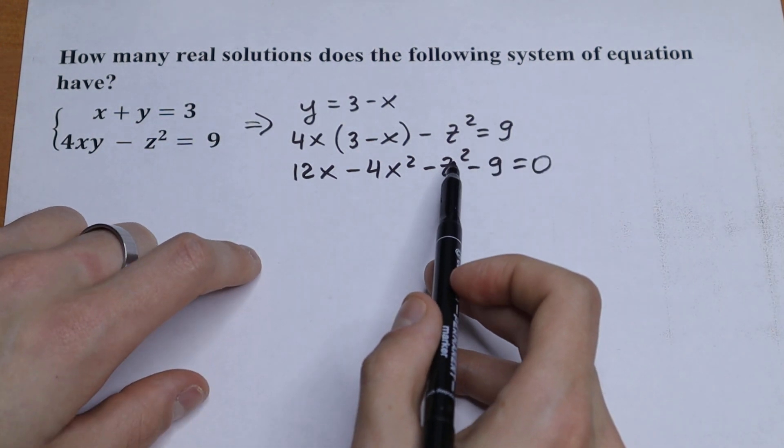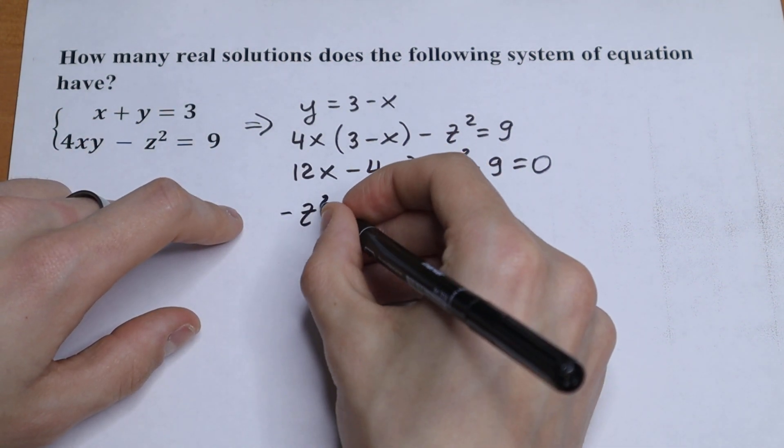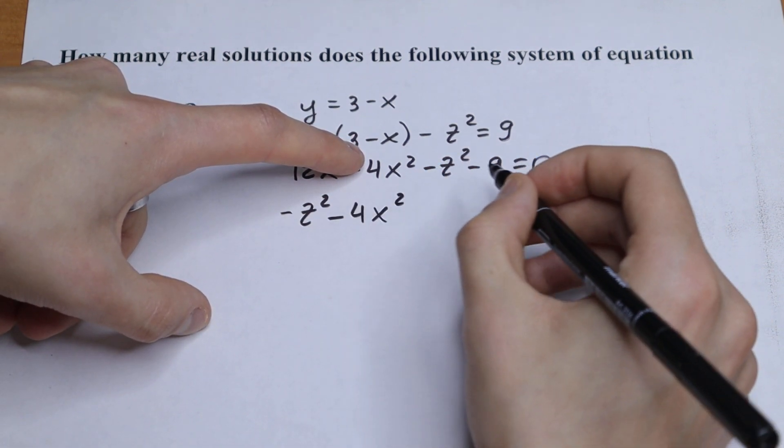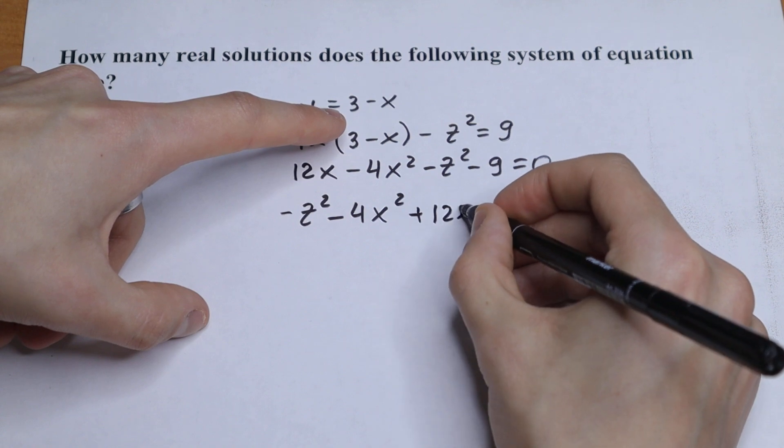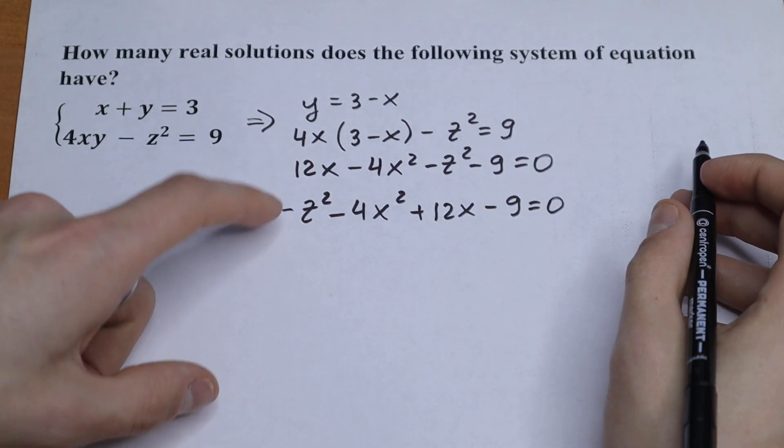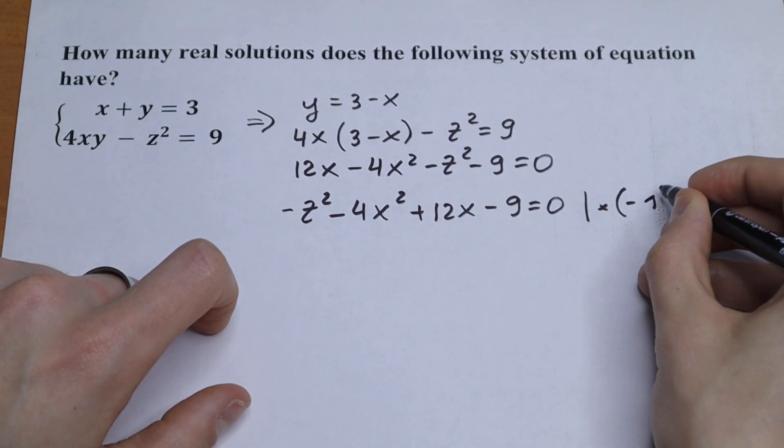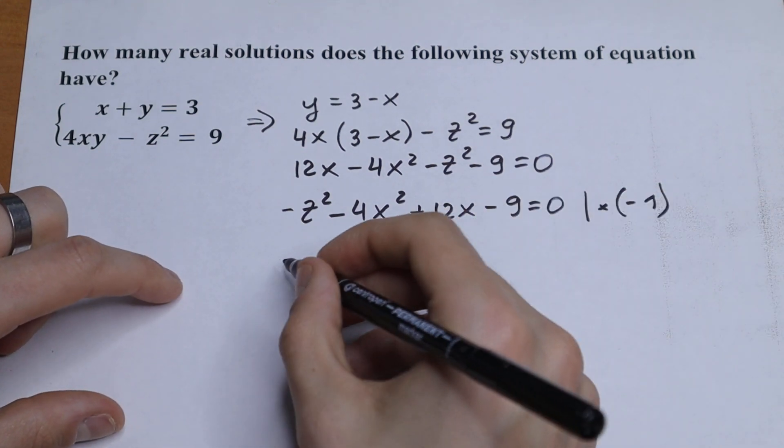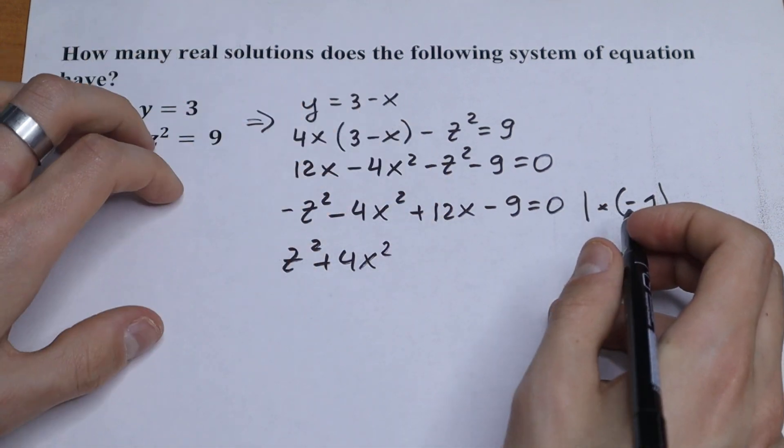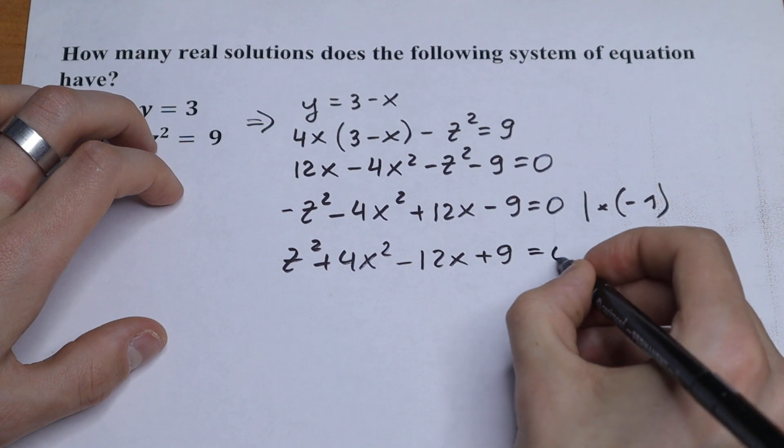So what we are going to do next? Let's change our order a little bit. Let's write the z square in the beginning. So minus z square, the next minus 4x square, the next plus 12x and minus 9. And it's a really good moment to multiply this by minus 1 because we don't need this minus right here. As a result we will have z square plus 4x square minus 12x and plus 9 equal to 0.